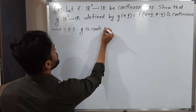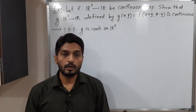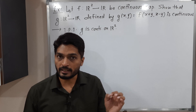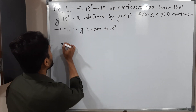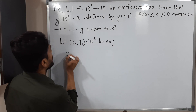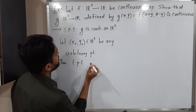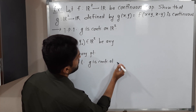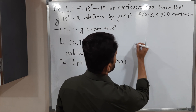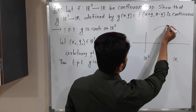To prove that g is continuous on ℝ², that means it is continuous at each and every point of ℝ². So I am going to take any arbitrary point of ℝ², let us call it (x₀, y₀), and we will simply prove that g is continuous at that arbitrary point. The domain is ℝ² and the codomain is ℝ, and function g is defined in this way.